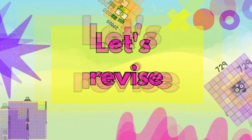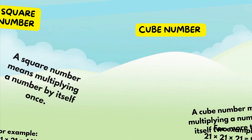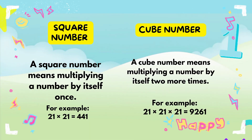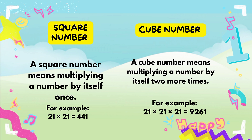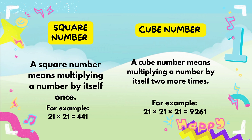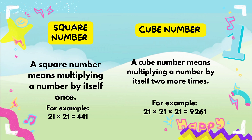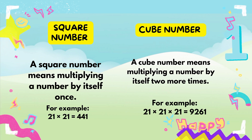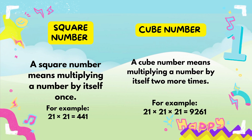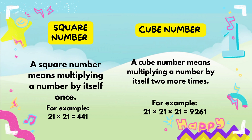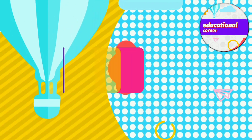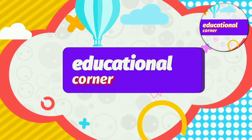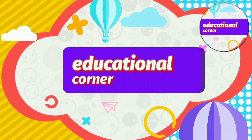Let's revise: a square number means multiplying a number by itself once. A cube number means multiplying a number by itself two more times. Hope you liked the video, bye!